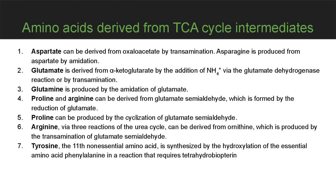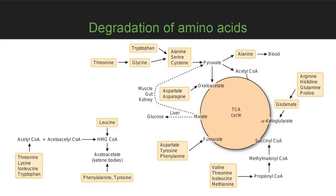Tyrosine, the 11th non-essential amino acid, is synthesized by hydroxylation of the essential amino acid phenylalanine in a reaction that requires tetrahydrobiopterin. Degradation of amino acids: amino acids that produce pyruvate are considered glucogenic because they can produce glucose in the liver. The fumarate group of amino acids produces cytoplasmic fumarate. Amino acids that produce acetyl-CoA or ketone bodies are considered ketogenic.